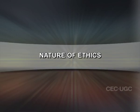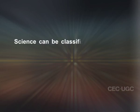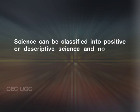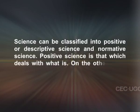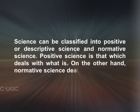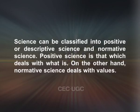Nature of ethics. Ethics is a science, which is a systematic knowledge. It deals with human conduct together with the inner volutions and their motives systematically. It is a science in so far as it depends upon observation, classification and explanation of human conduct with reference to an ideal. Science can be classified into positive or descriptive science and normative science. Positive science is that which deals with what is. On the other hand, normative science deals with values.